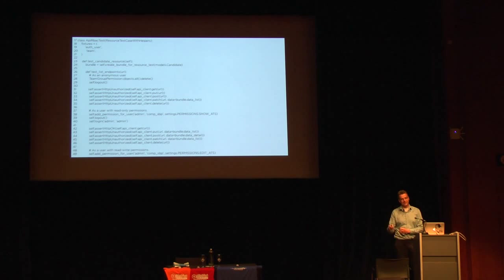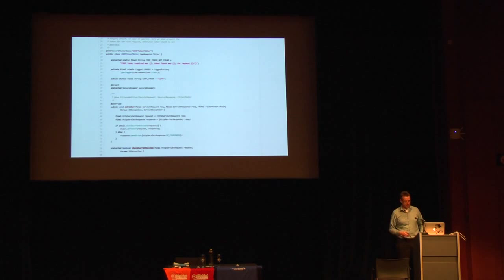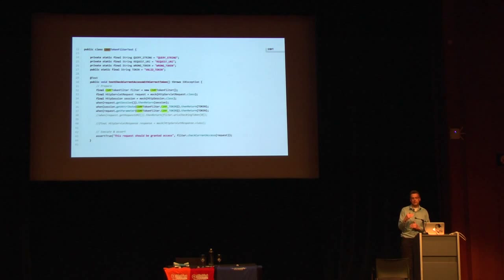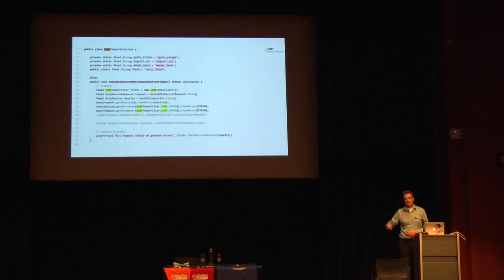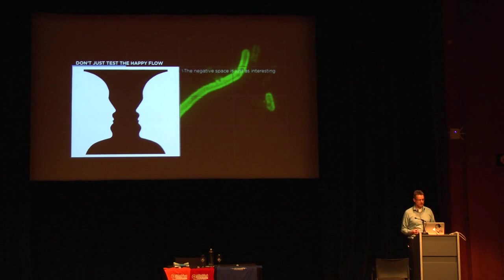Another example from a colleague involves cross-site request forgery tokens. Here's a snippet of the unit test for CSRF handling. What we're trying to do is verify that a valid request is granted, but there are about eight test cases where the request should fail. That's a key practice we need to change — we need to look at the negative space as well as the positive space for unit tests. Do we see the face, or the faces? It's a new skill because most of the testing we do is for functionality, for the positive space.